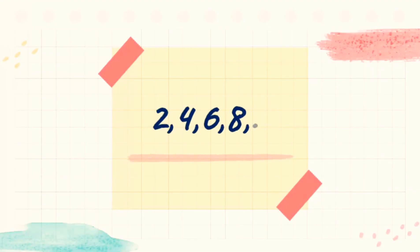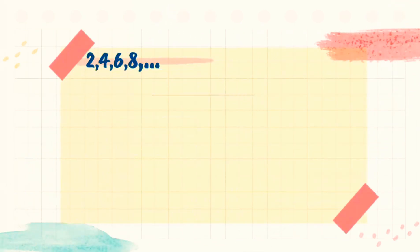One example of arithmetic sequence is 2, 4, 6, 8, and so on. But we are required to find the 12th term. In order to solve the 12th term of the given arithmetic sequence, we shall find the common difference, the first term, and the nth term. So, we got 2 as our common difference, 2 for our a sub 1, and 12 for our nth term.